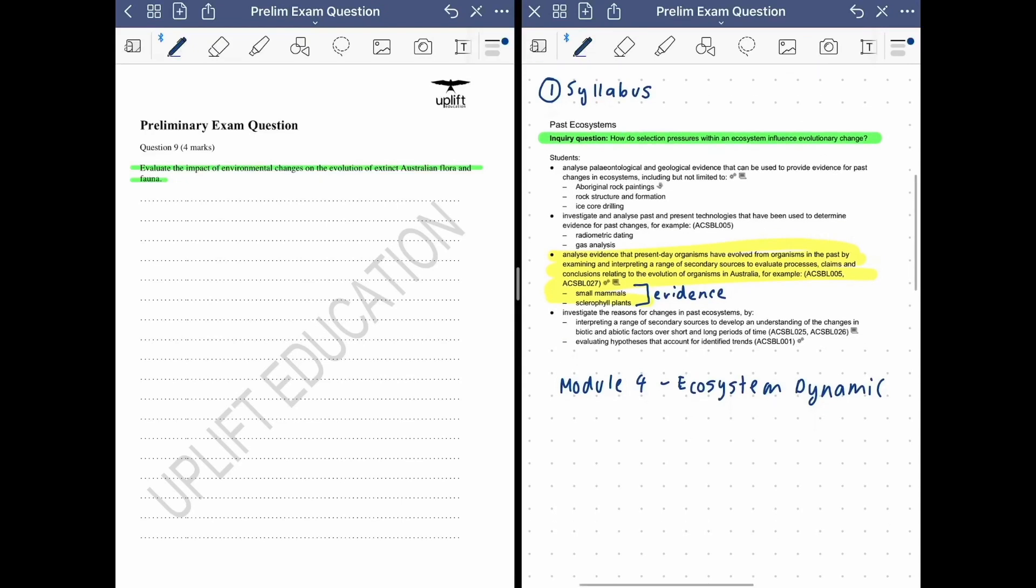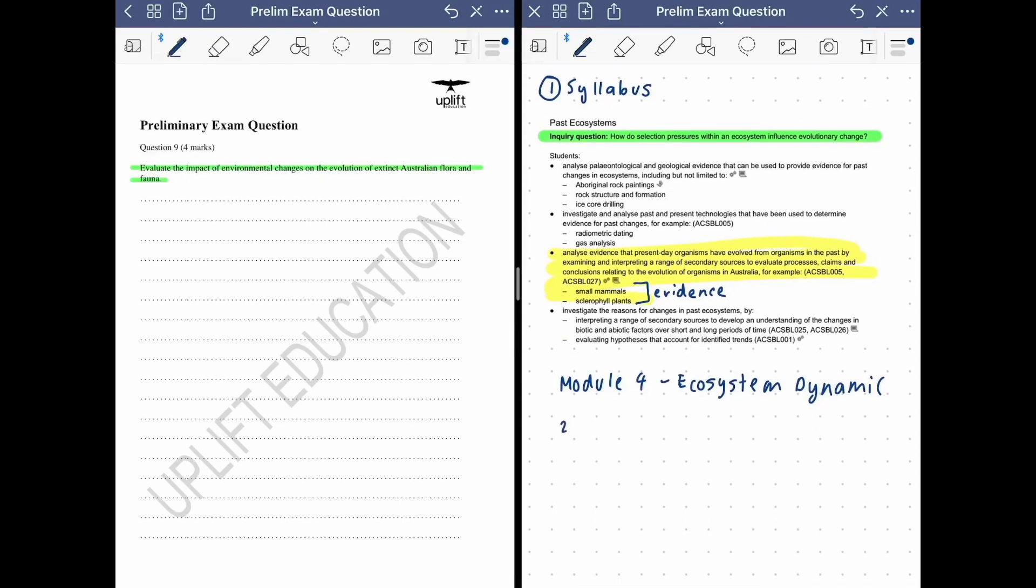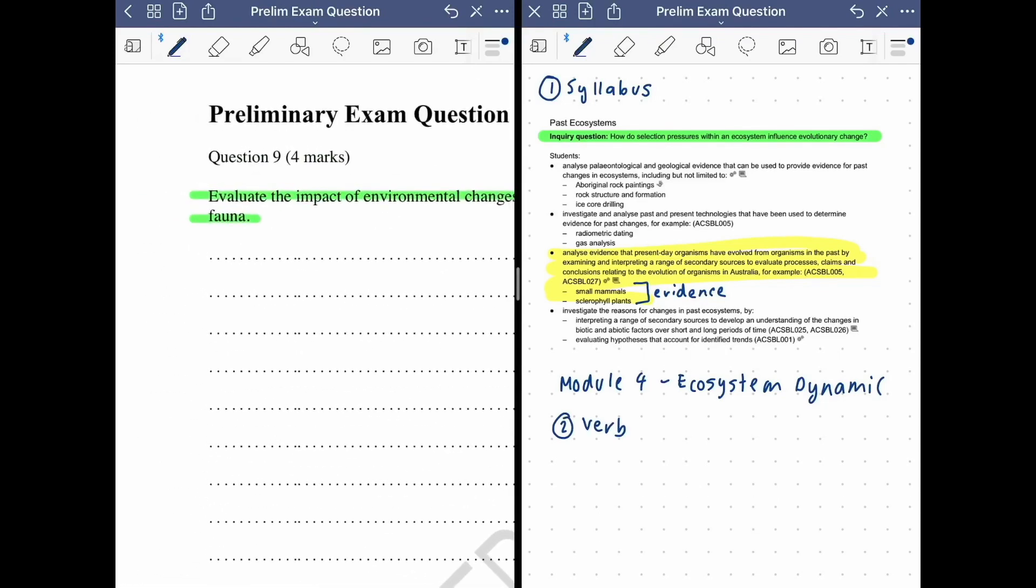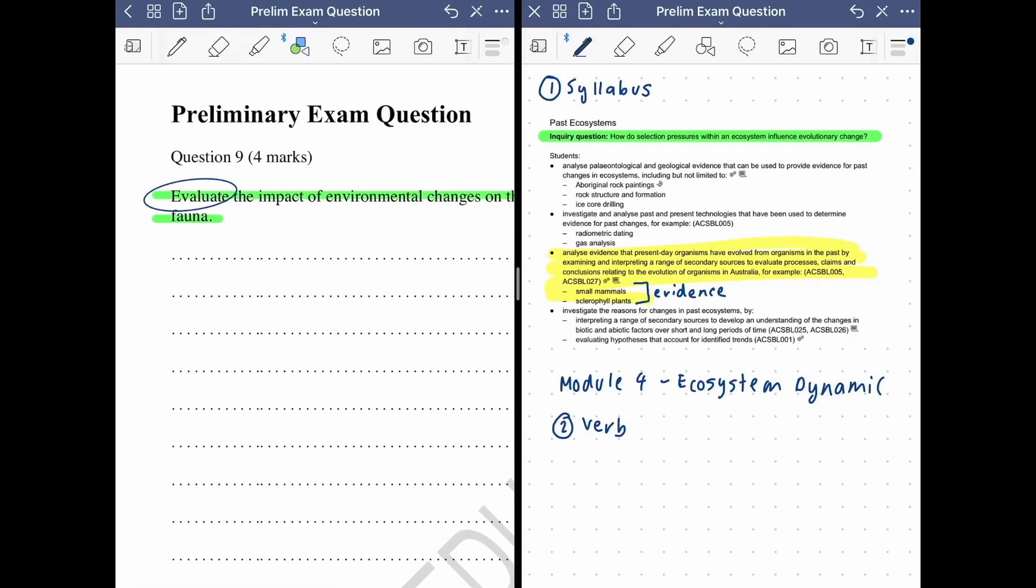Step number two is to look at the verb of the question. So just flipping to the left hand side over here, the verb that's been given to us is evaluate. So Nessa puts out a list of key verbs that you guys need to know. When we go through that list, we'll see that evaluate means to provide judgment essentially. So I'll just drop that down above the question.